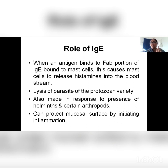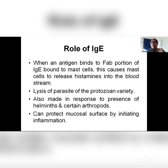Quick revision: IgG can cross the placenta. IgM is the first immunoglobulin — when infection is present it is the first to rise, and then IgG comes. IgG persists for longer periods, but IgM is first. If IgM is found in the fetus, it denotes congenital defects. IgA is present in all secretions of the body. IgE is responsible for fighting parasites like protozoans, helminths, and arthropods. Thank you so much.